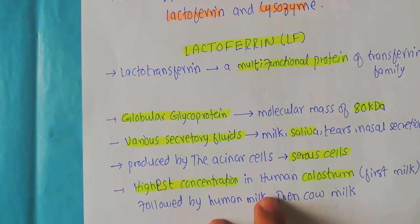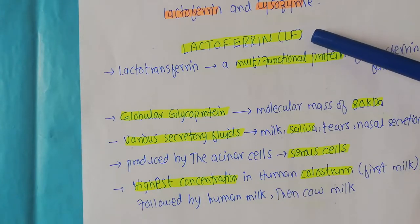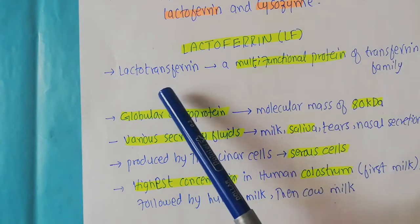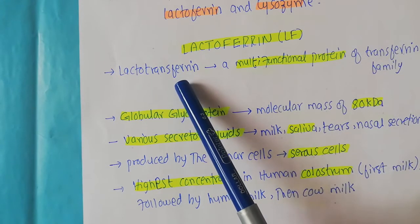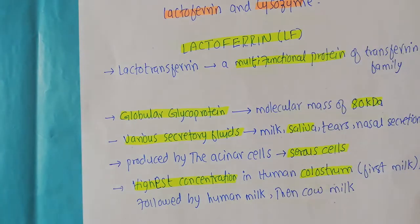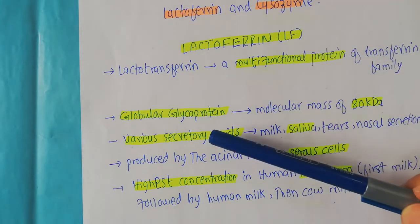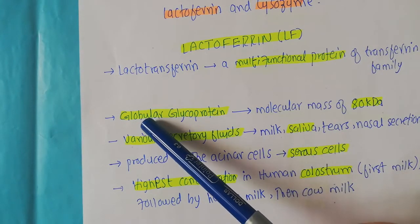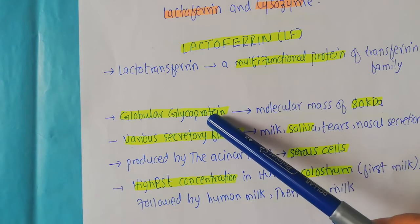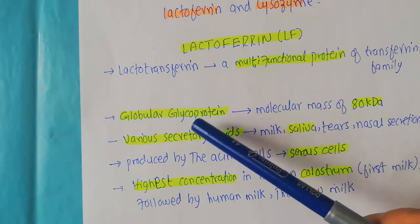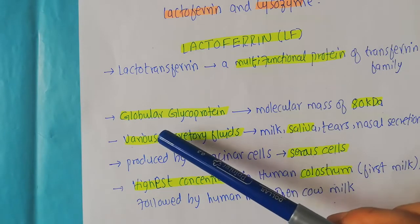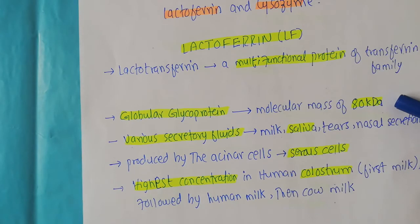Now in this video I want to focus on the function of the lactoferrin, which is another important antimicrobial enzyme found in the saliva. Lactoferrin is also known as lactotransferrin and it is a multifunctional protein of the transferrin family. It is a globular glycoprotein — globular referring to its shape, and glycoprotein meaning it undergoes post-translational modification where carbohydrate moieties are added. Lactoferrin has a molecular weight of 80 kilodaltons.